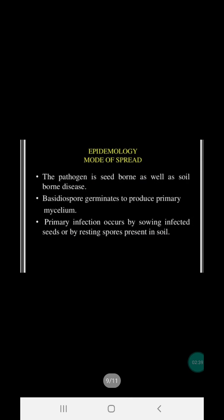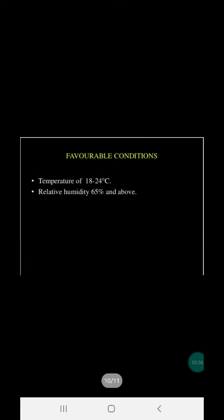Regarding epidemiology and mode of spread, the pathogen is both seed-borne and soil-borne. Basidiospores germinate to produce primary mycelium, and primary infection occurs by sowing infected seeds or by resting spores present in the soil. Favourable conditions include a temperature range of 14-24 degrees centigrade and relative humidity of 65% and above.